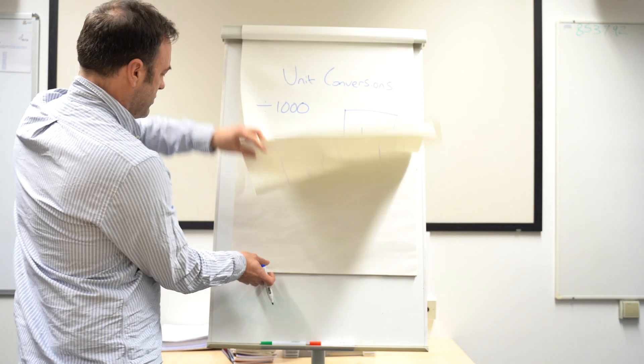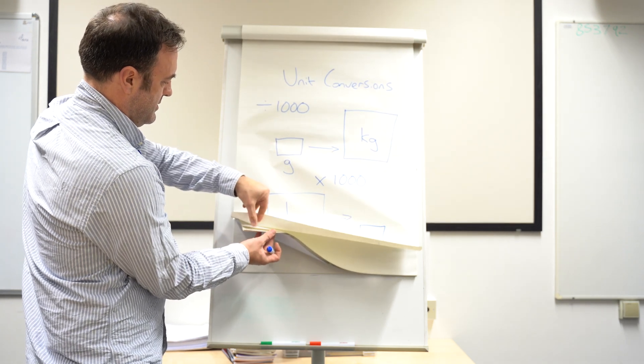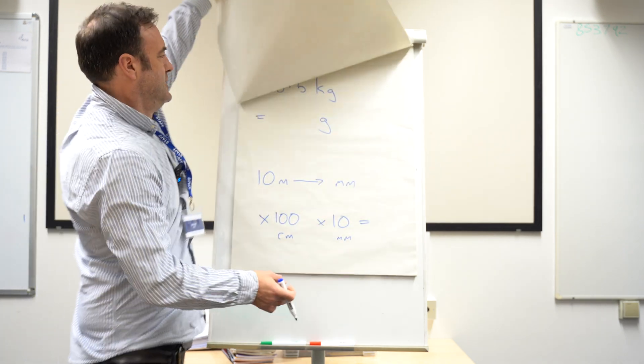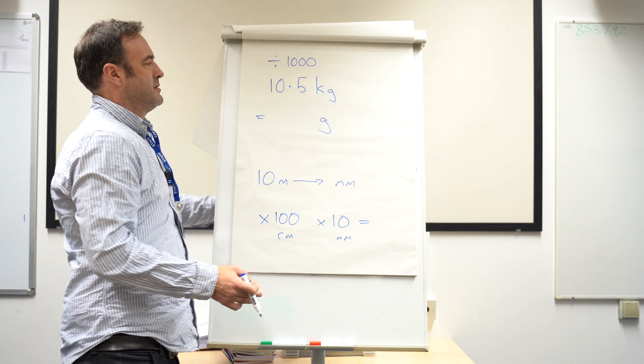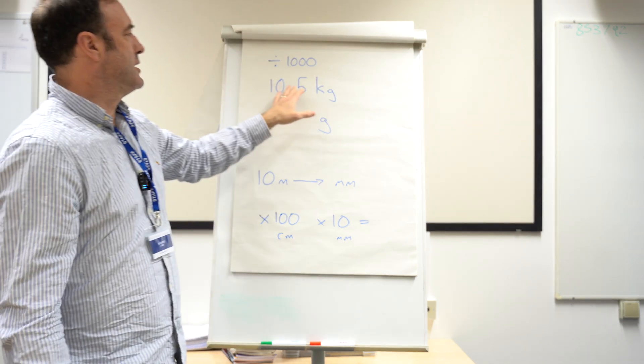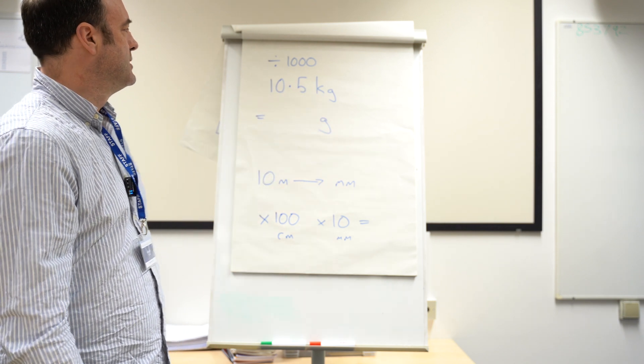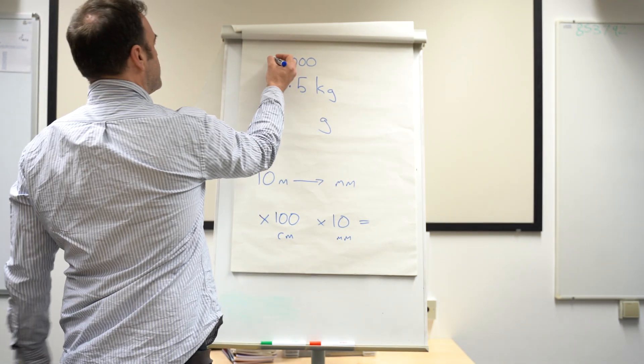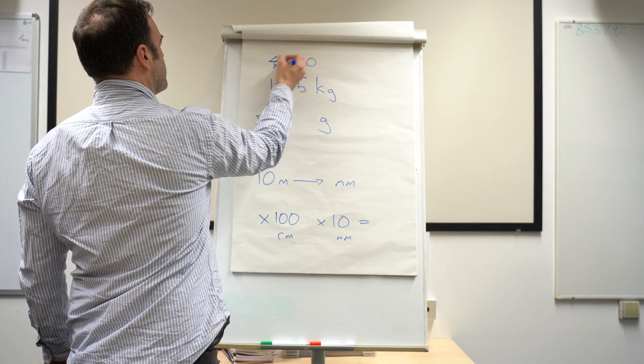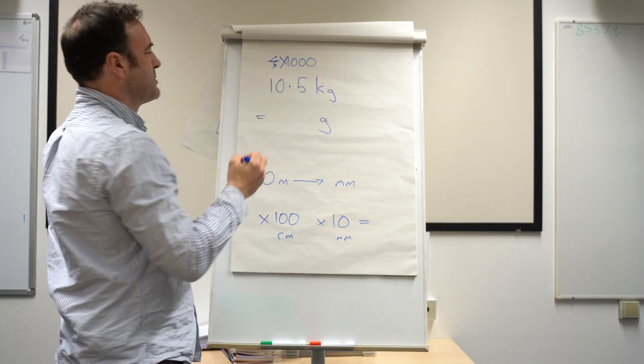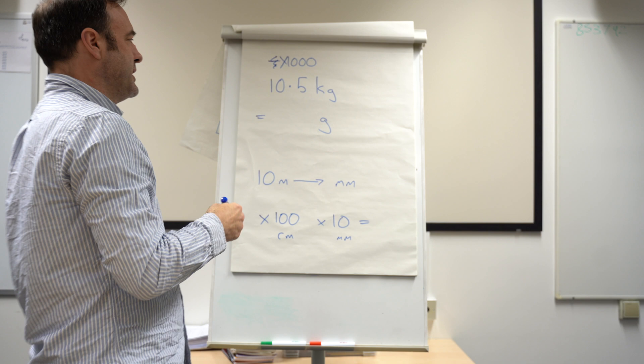So if we move on, if we were going to convert 10.5 kilograms to grams, what we would actually do—that should say multiply, shouldn't it? We would multiply by 1000 because we'd have more of them.